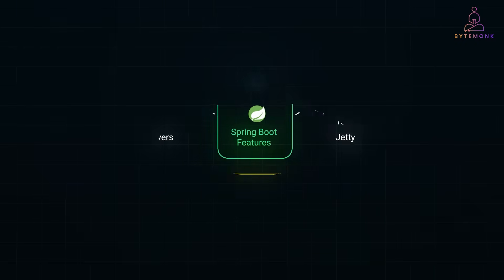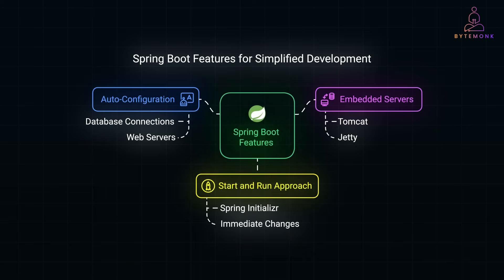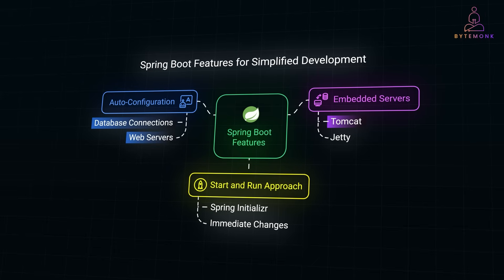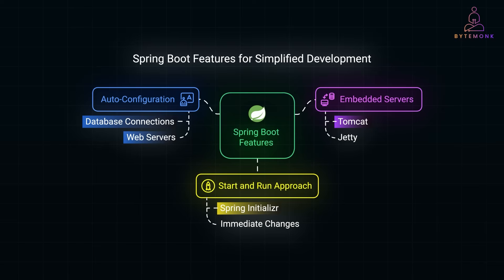Spring Boot is like the fast-track ticket to building Spring applications. Traditionally, setting up a Spring project meant juggling multiple XML files or heavy configurations. Spring Boot changes the game by offering auto-configuration — it scans your classpath and automatically sets up common features like database connections or web servers based on what it finds. If you have a JDBC driver, it configures your data source; if you have the Spring Web dependency, it sets up a default Tomcat or Jetty server. Spring Boot also bundles an embedded server — Tomcat by default — so you can run your whole app just by calling main, no more deploying WAR files to an external server. You can also create a brand new project using Spring Initializer, add a few dependencies, generate the project, and you have a working application in minutes. It's perfect for rapid prototyping.